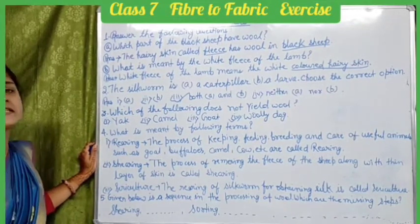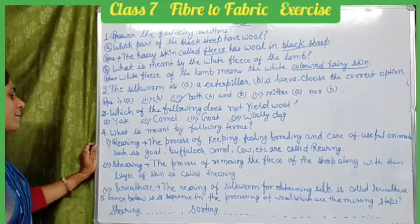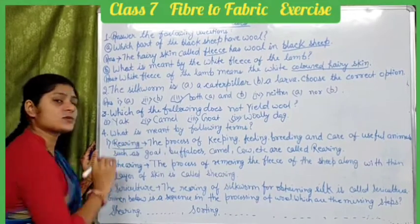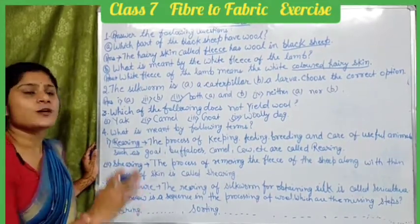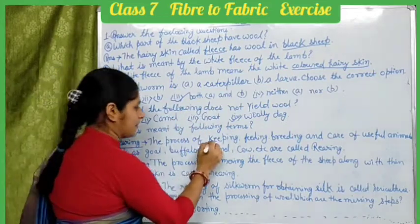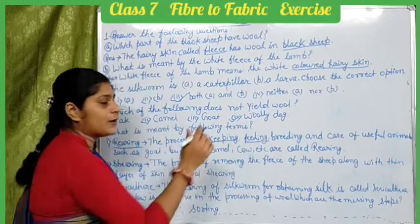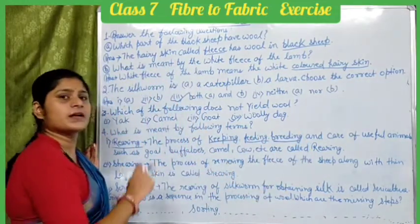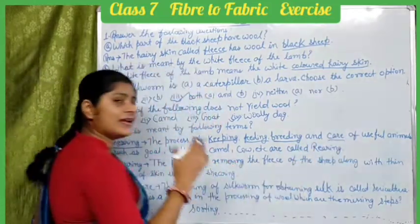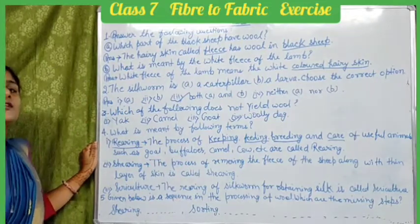The next question asks the meaning of certain terms. The first term is 'rearing.' Rearing is the process of keeping, feeding, breeding, and care of useful animals. Keeping means रख-रखाव, feeding means खिलाना-पिलाना, breeding means producing offspring, and care means उनका ख्याल रखना.